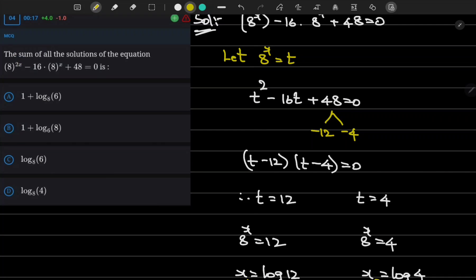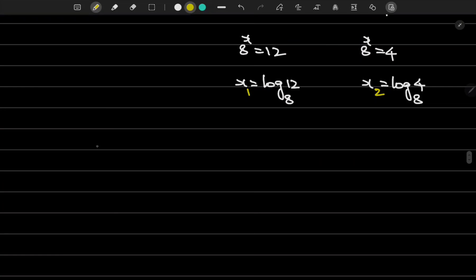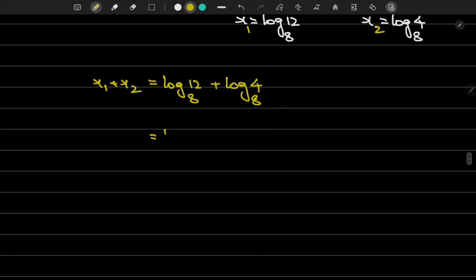Therefore let me find the value of x₁ + x₂ = log₈(12) + log₈(4). Log a plus log b can be written as log(ab), so 12·4 = 48. Log₈(48).